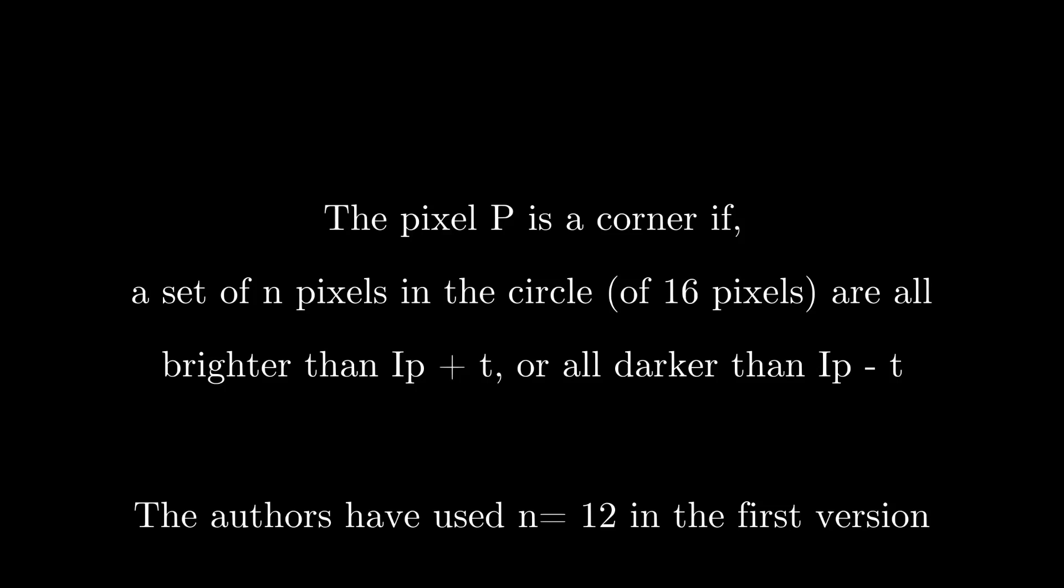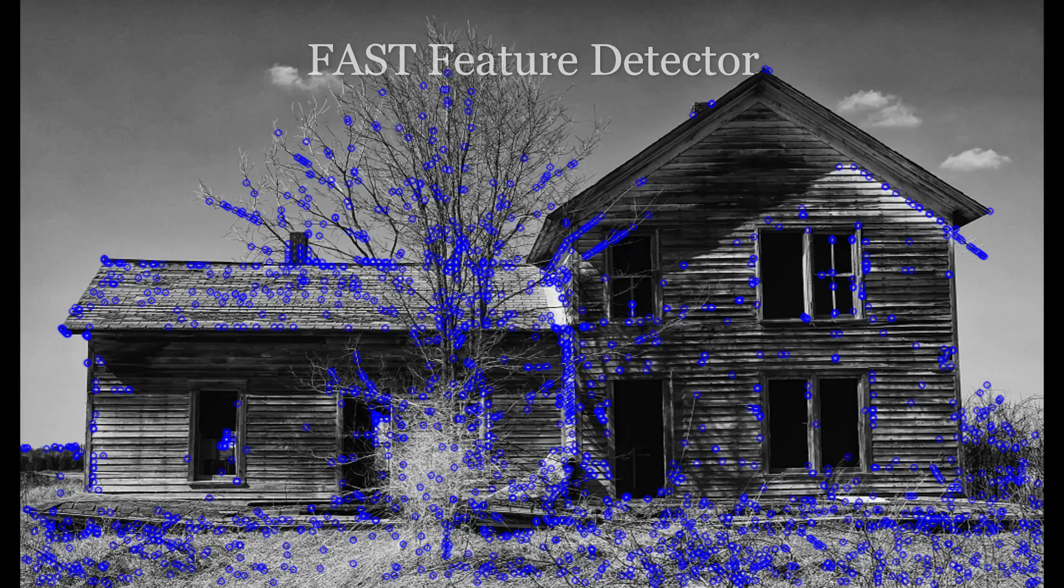The most promising advantage of using FAST corner detector is its computational efficiency. We saw Harris Corner and Shi-Tomasi detectors earlier in the video. They are really good but they are not fast enough. Therefore, we tend to use FAST feature detector in real-time applications because of its high speed performance.